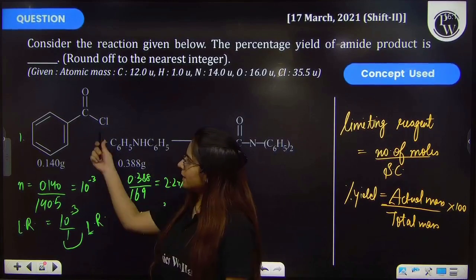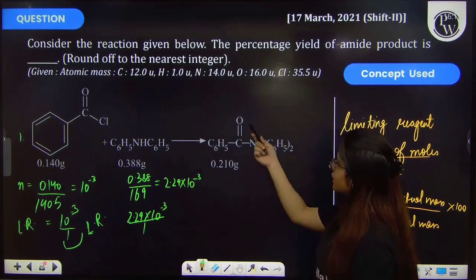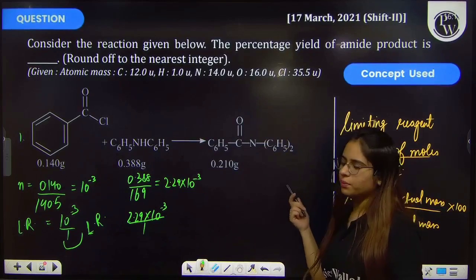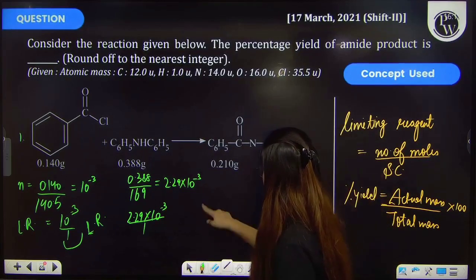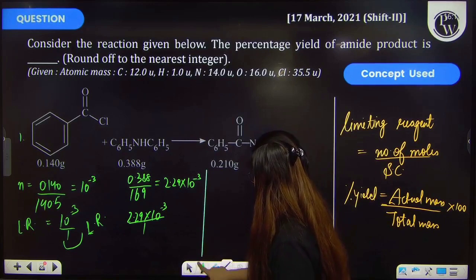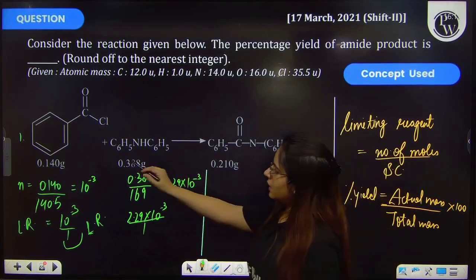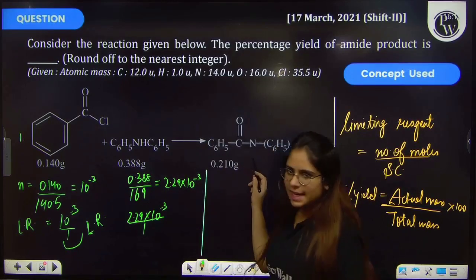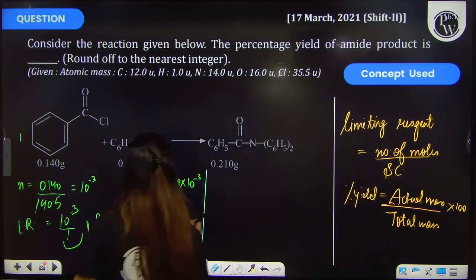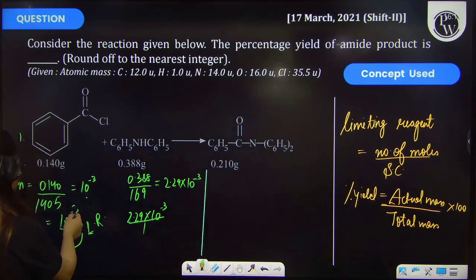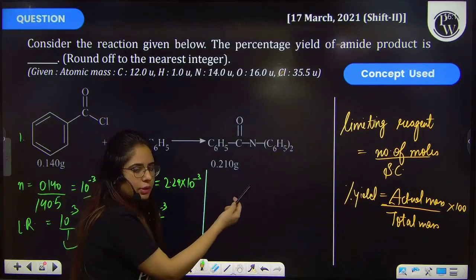So on the basis of this, you will tell how much amount of this amide product has been formed. Further, if it's one mole, then it's also one mole product. So therefore, if we have 2.29 × 10^-3 moles, this much moles of this product will be formed.